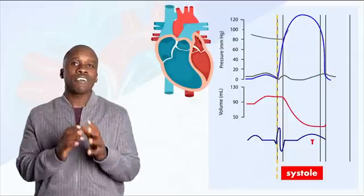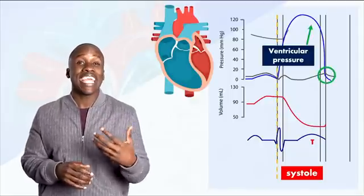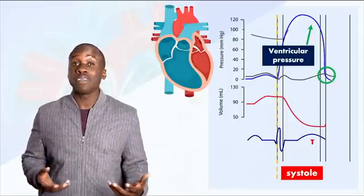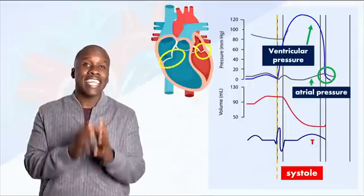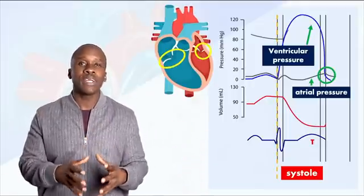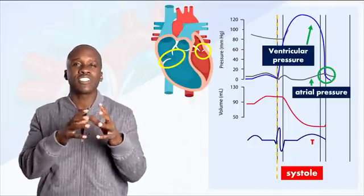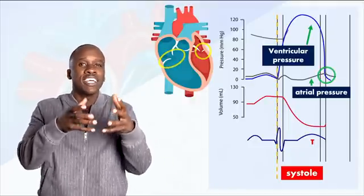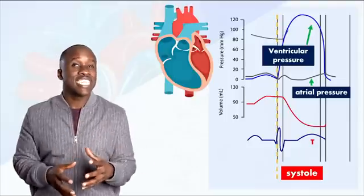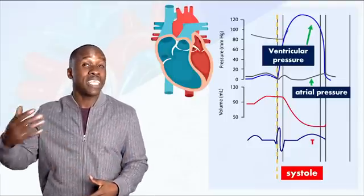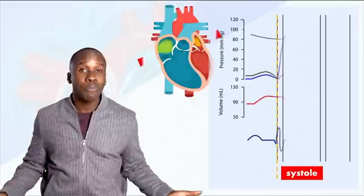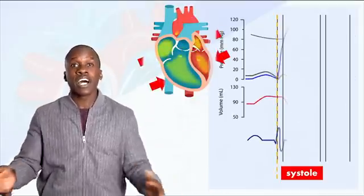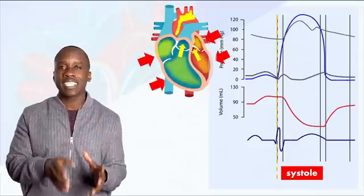Now, once that ventricular pressure gets below the atrial pressure, what's gonna happen to the atrioventricular valve? It's gonna open up again. And at that point, the valves are open and the blood that's coming back from the body will just start passively filling the ventricles. And that continues up to the point where we get our next P wave to start the entire process again. That's pretty much the cardiac cycle.